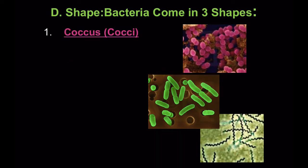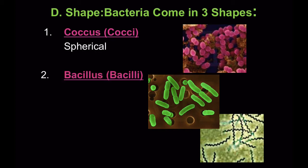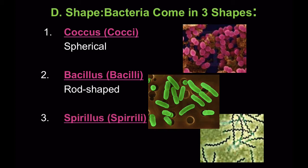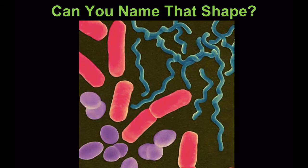Bacteria come in three shapes: coccus, which means round or spherical; bacillus, which is rod-shaped; and spirillus, which is a spiral shape. When we name bacteria, we name them based on their shape and also based on their grouping.